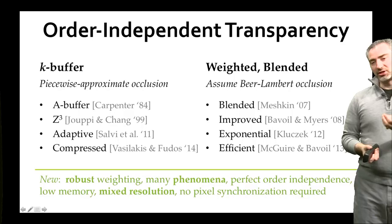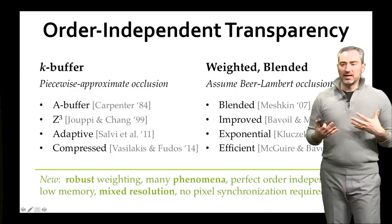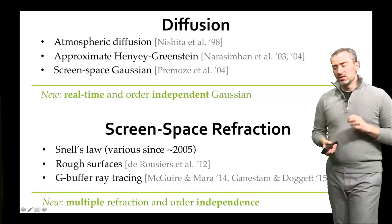Weighted blended methods are essentially K-buffers with a single layer, so they collapse everything. What's new in this work is that phenomenological transparency has a robust weighting scheme that makes it better than previous weighted blended methods, and it captures many more phenomena than all of these methods have handled before.